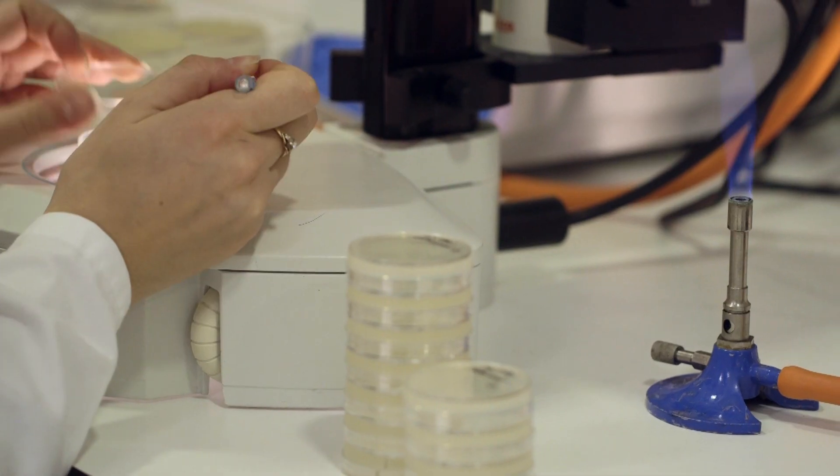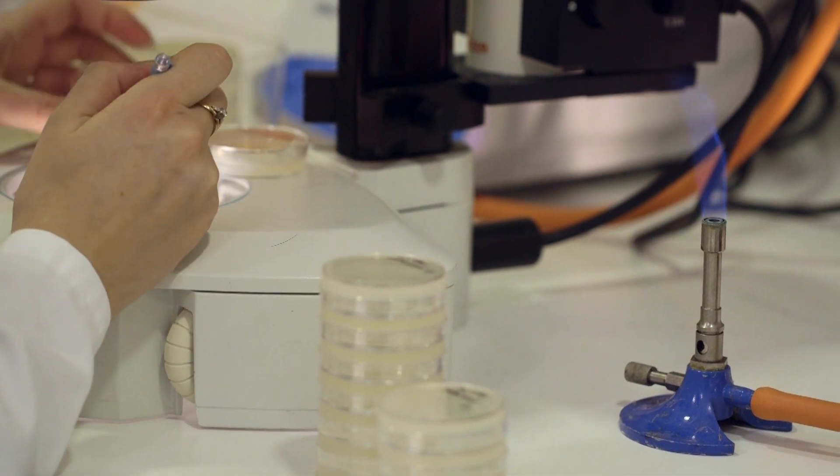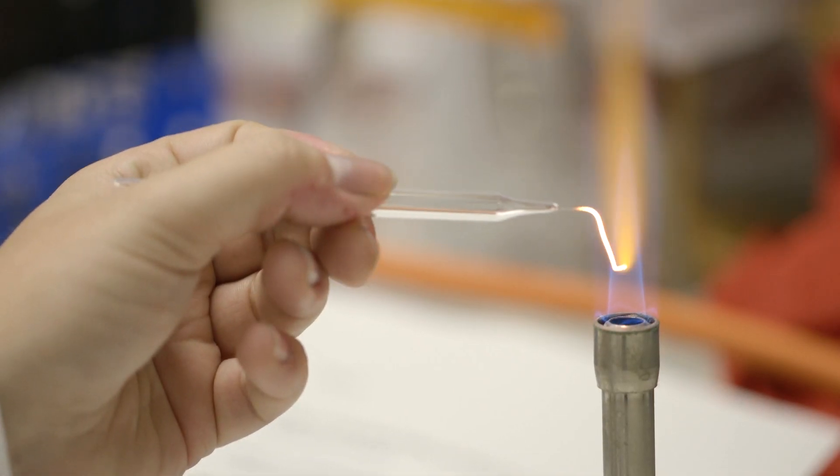We made a bacterial library of 17,000 bacterial strains and we fed them to worms one by one and then we asked what happened to the organism when the gene was turned off.